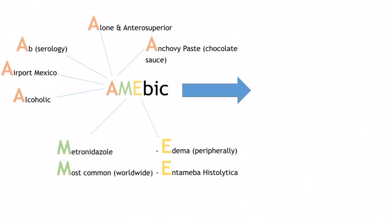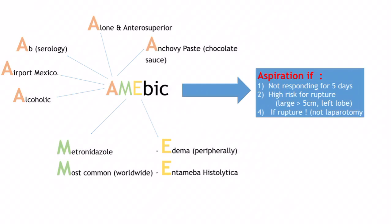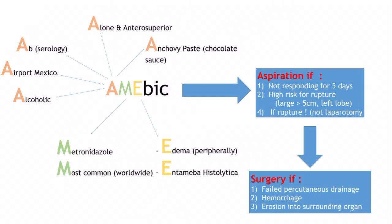If the patient does not respond to metronidazole and paromomycin, aspiration is indicated. Aspiration is also indicated if not responding after five days, or if there is high risk of rupture — meaning the abscess is larger than 5 cm or is in the left lobe, which risks rupture into the pericardium. Historically, rupture required laparotomy, but now aspiration is the preferred approach, as clearly stated in Cameron and Sabiston textbooks.